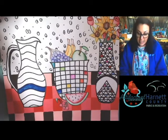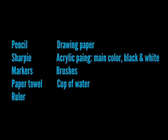The materials you will need are a pencil, drawing paper, a Sharpie, and acrylic paint. You only need one color of acrylic paint depending on what color you want for your tablecloth, in addition to black and white acrylic paint so you can get different values. You'll also need markers, brushes, paper towels, a cup of water, and a ruler so that we can grid off our tablecloth.